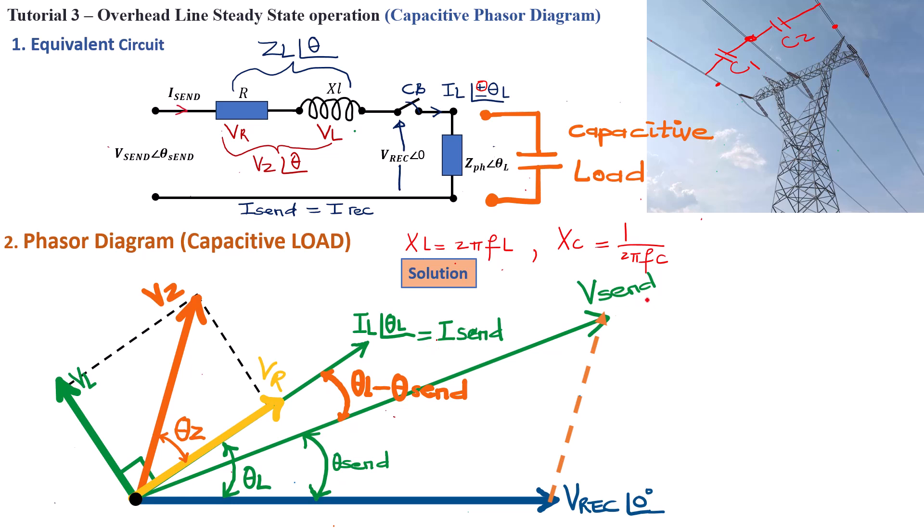for this tutorial on how to draw the phasor diagram for a short transmission line in steady-state operation. Tutorial one we did for resistive load. Tutorial two for inductive load. Now we're closing this series with capacitive load. So I hope you found it useful.